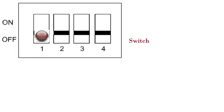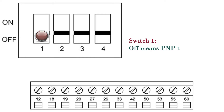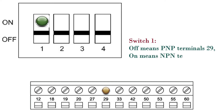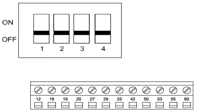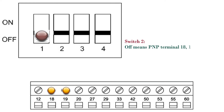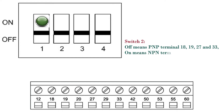Switch 1: Off means PNP terminal 29; On means NPN terminal 29. Switch 2: Off means PNP terminals 18, 19, 27 and 33; On means NPN terminals 18, 19, 27 and 33.